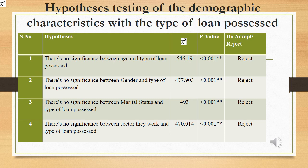To understand any significant association between demographic variables like age, gender, marital status, and the sector they work in with the type of loan possessed, hypotheses were developed and tested using chi-square analysis. The null hypotheses stated there is no significant association between each of these variables and the type of loan possessed. The result reveals that, at 1% significance level, the null hypothesis is rejected, indicating that age, gender, marital status, and whether or not they work in the finance sector do have a significant impact on the type of loan possessed.